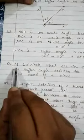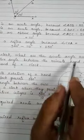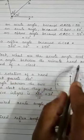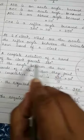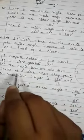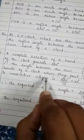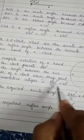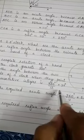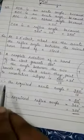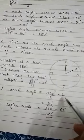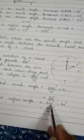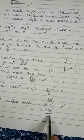Second question: At 2 o'clock, what are the acute angle and the reflex angle between the minute hand and hour hand of a clock? A complete rotation of a hand of the clock generates 360 degree. Therefore, the angle between the two hands when they point to consecutive integers is 360 divided by 12, that is equal to 30 degree. Therefore, the required acute angle is equal to 360 degree divided by 12 into 2, that is 60 degree. The required reflex angle is equal to 360 degree minus 60 degree, that is 300 degree.